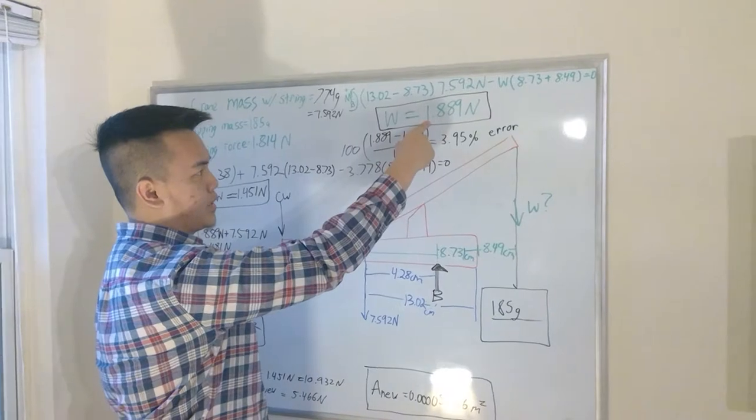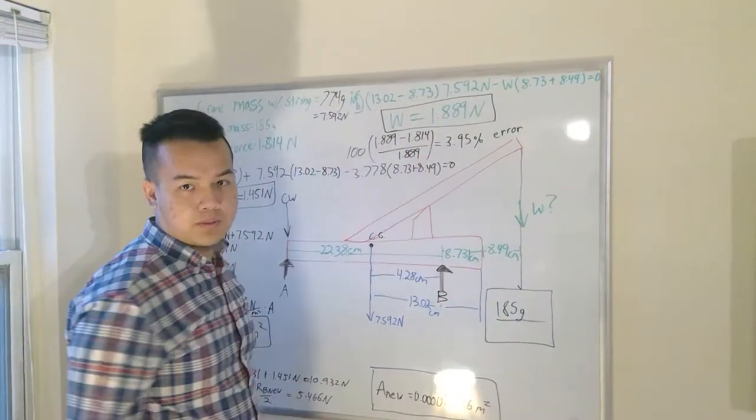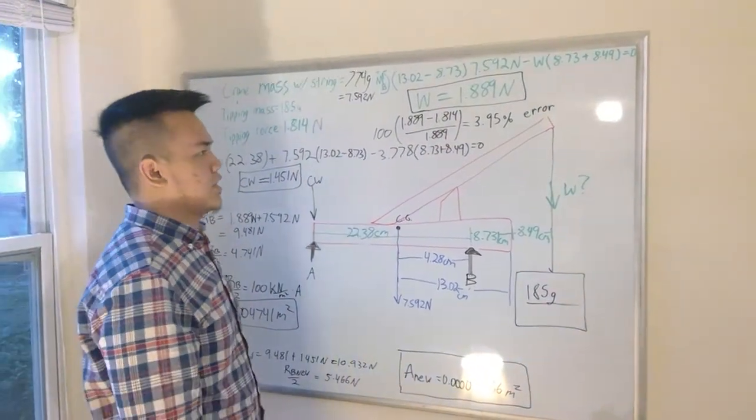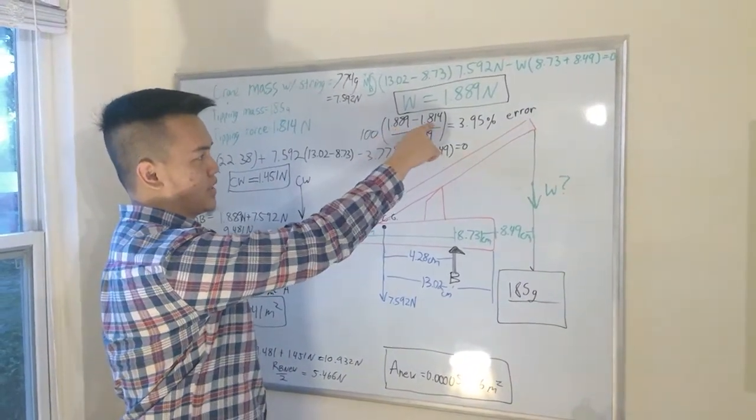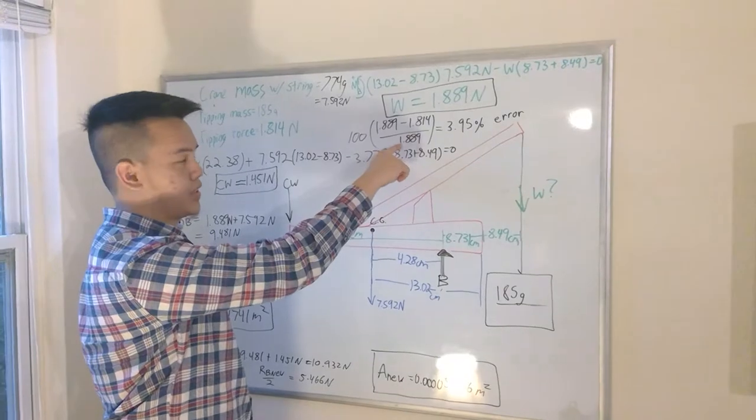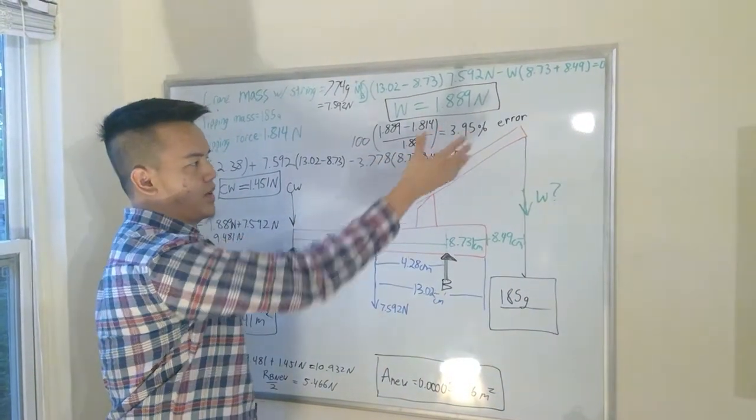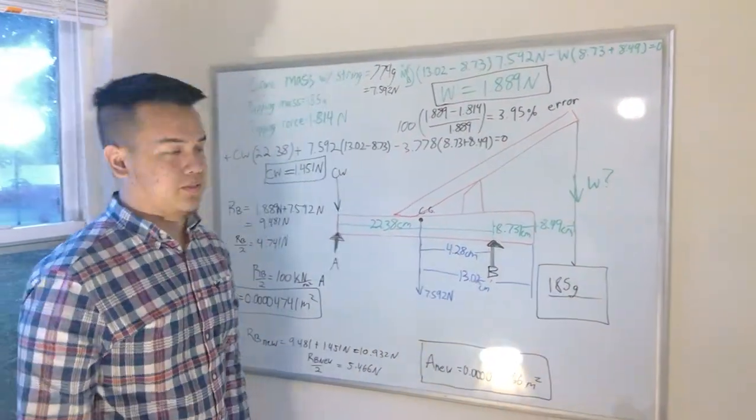Then you solve it and you get the weight is 1.889 newtons. Now the percent error, you do the theoretical minus the experimental divided by the theoretical, and we got around 4 percent error, which is really good.